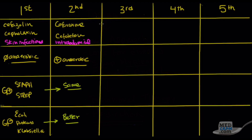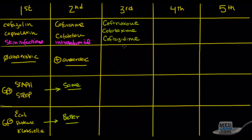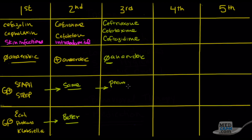Let's go on to the third generation cephalosporins. There are three major examples you should know. One is ceftriaxone, the other is cefotaxime, and the last is the very important ceftazidime. In terms of anaerobic coverage, it lost it again — no anaerobic coverage here, whereas we had it in the second generation. In terms of gram-positives, it was okay — definitely very good for pneumococcus, but probably not as good for staph aureus.